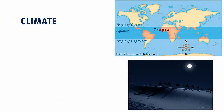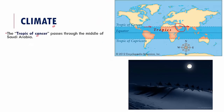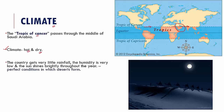The Tropic of Cancer passes right through the center of Saudi Arabia, which makes its climatic conditions very hot and dry. The country gets very little rainfall, humidity is also very low, and the sun shines brightly throughout the year. These conditions — hot and dry climate, very little rainfall, low humidity, and bright sunshine — are perfect for deserts to form.